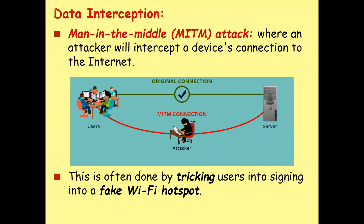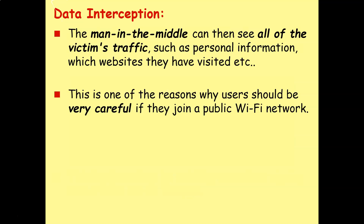In a man-in-the-middle attack, an attacker intercepts a device's connection to the internet. This can often be done by tricking users into signing into a fake Wi-Fi hotspot. The attacker is literally in the middle — the user thinks they're connecting to a server, but they're actually connecting through the hacker's system so that the hacker can monitor and change the web traffic. The man in the middle can see all of the victim's information, such as personal information and which websites they have visited. This is one of the reasons why users should be very careful if they join a public Wi-Fi network.